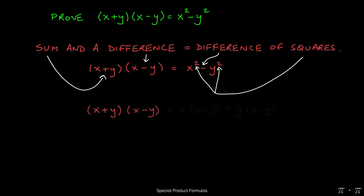We can start by distributing just like we have in the past. The x will get multiplied by both x minus y, and then the y will get multiplied by both x minus y as well.